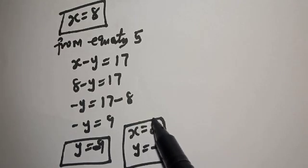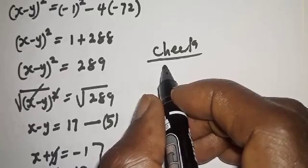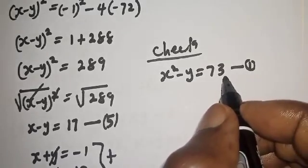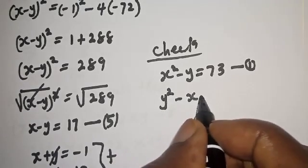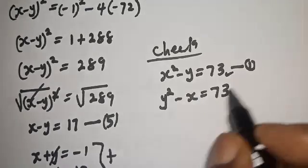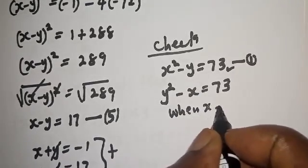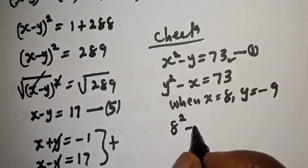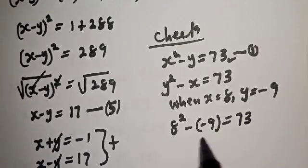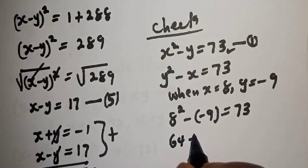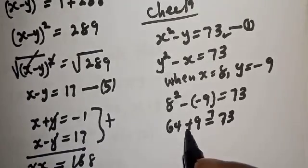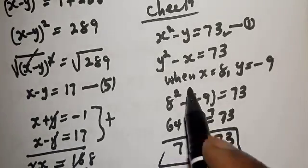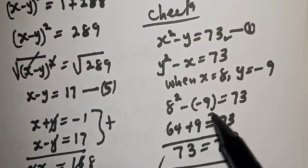Therefore our final answers are S equals 8 and Y equals minus 9. Let's check: equation 1 is S squared minus Y equals 73. Substituting S equals 8 and Y equals minus 9: 8 squared minus (minus 9) equals 64 plus 9 equals 73, which equals 73. We satisfy the given equation at S equals 8 and Y equals minus 9.